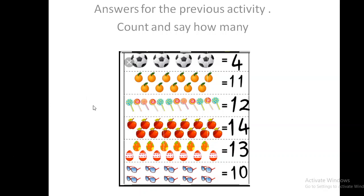We count the balls. 1, 2, 3, 4. There are 4 balls. And then the oranges. 1, 2, 3, 4, 5, 6, 7, 8, 9, 10, 11. 11 oranges.